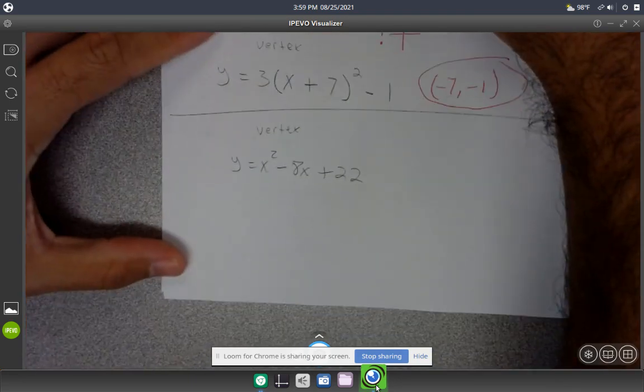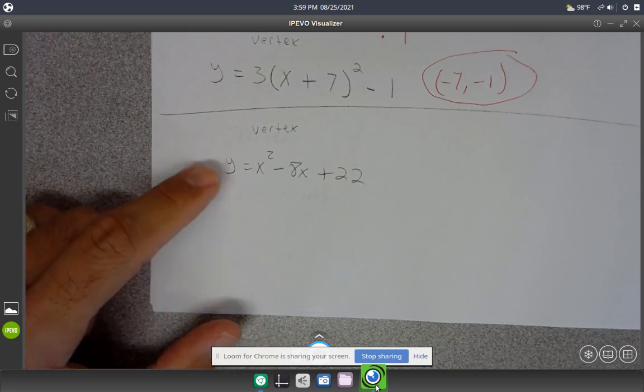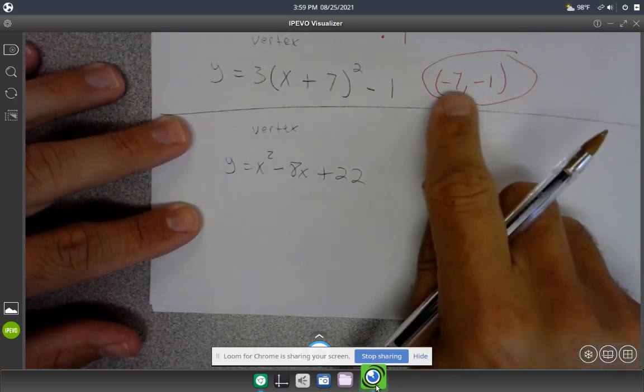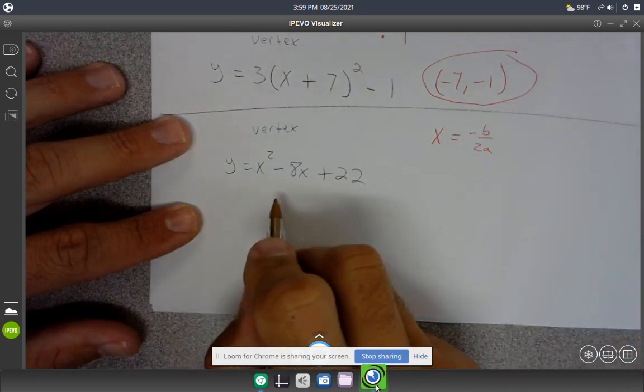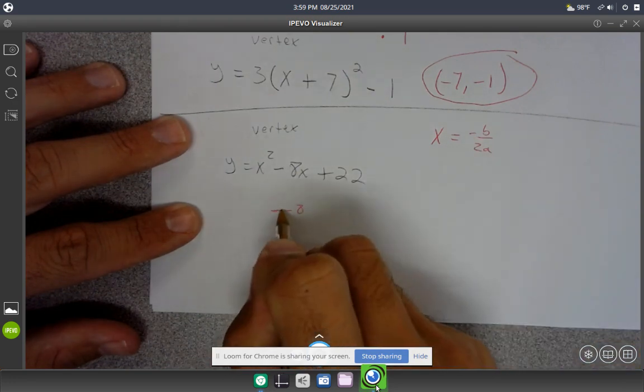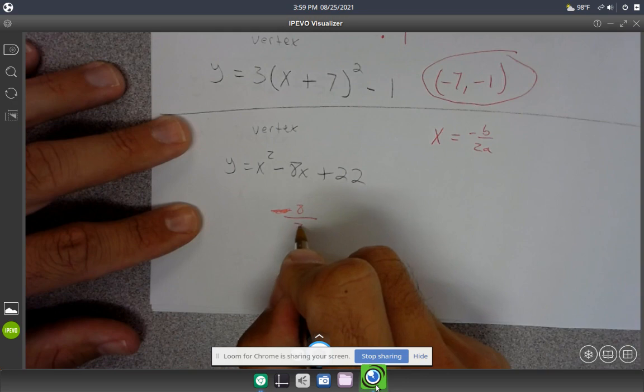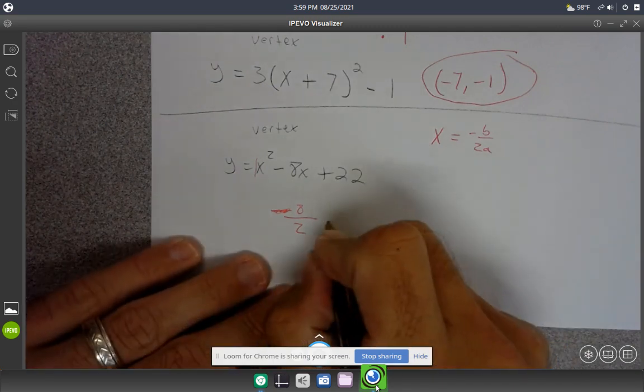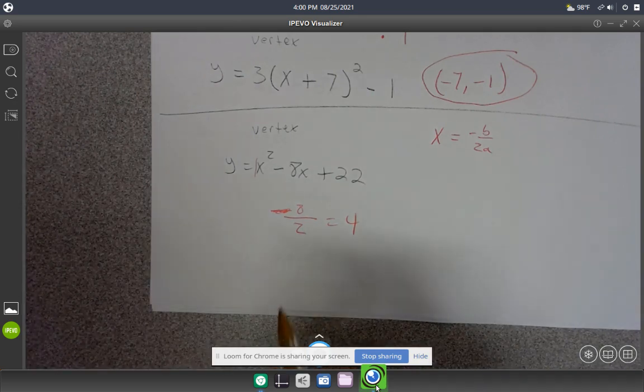To find the vertex in standard form takes more work. Apply -b/2a to find the x coordinate. That's negative of -8, which is positive 8, over 2 times a. Since a is 1, that's 8 over 2, which equals 4. So the x coordinate is 4.